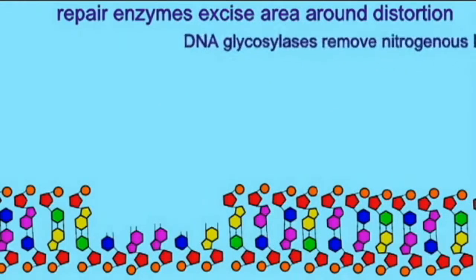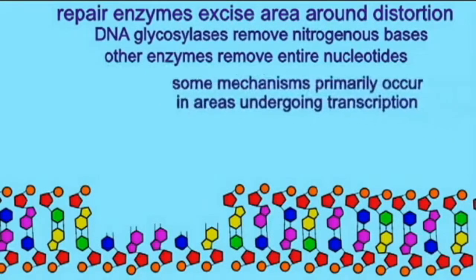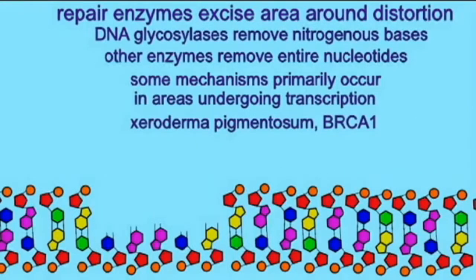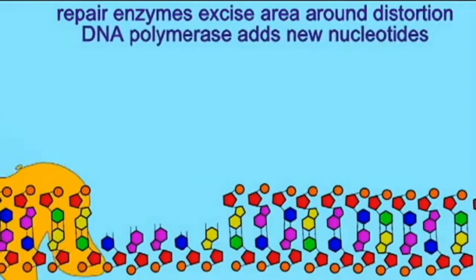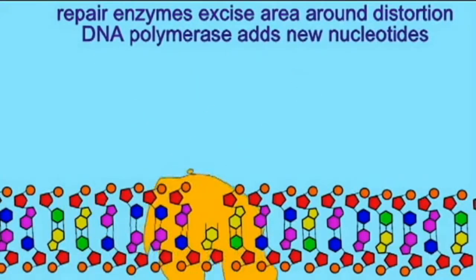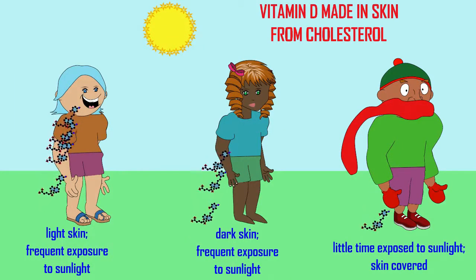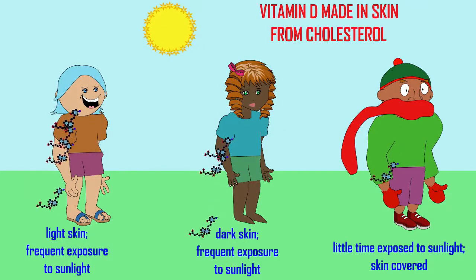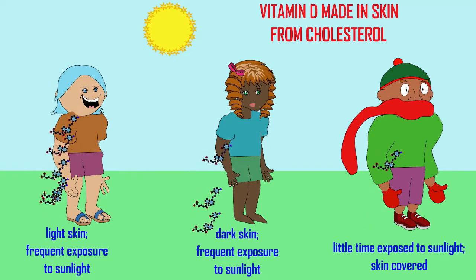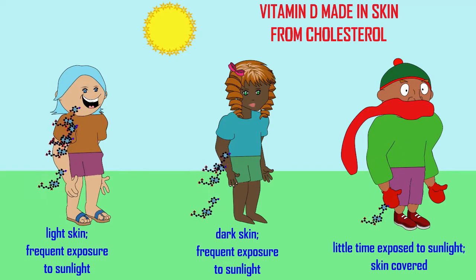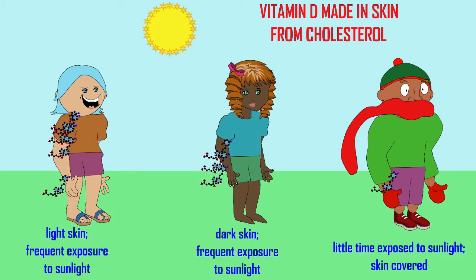Therefore, when one is exposed to a great deal of sunlight — especially if one lived closer to the equator — then having darker skin with more of the pigment melanin, which absorbs ultraviolet light, would be an advantage. It would be a protection from skin cancer.